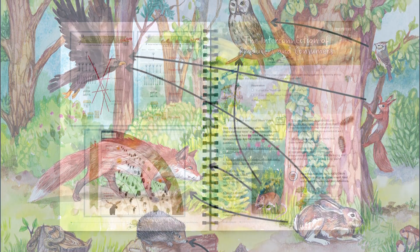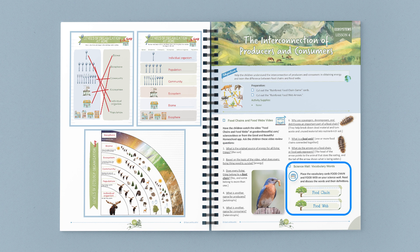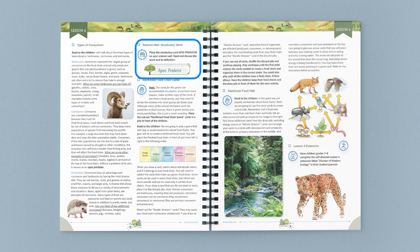It is followed by a discussion that includes topics such as the energy source for all living things, the explanation of the food chain, and the role each part of the food chain plays. Three new vocabulary words are introduced: food chain, food web, and apex predator.